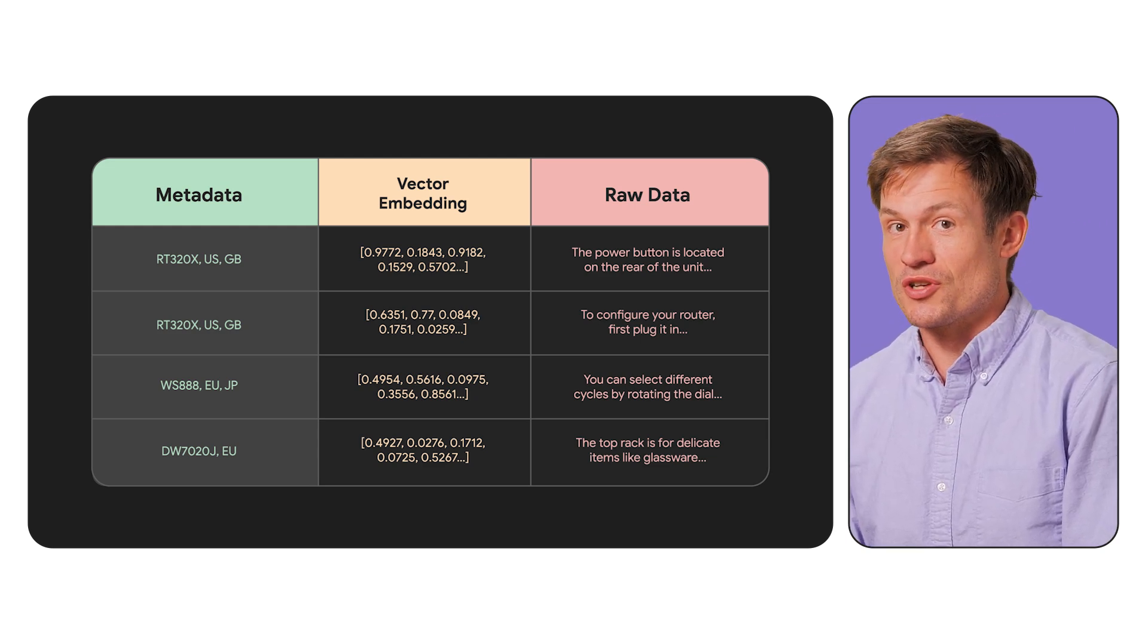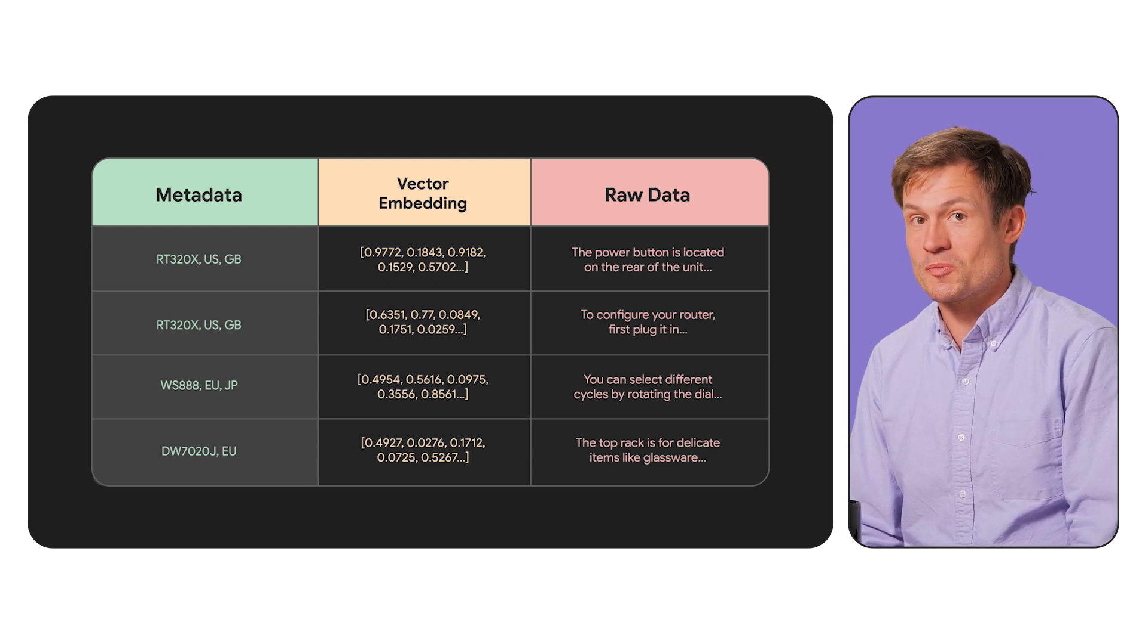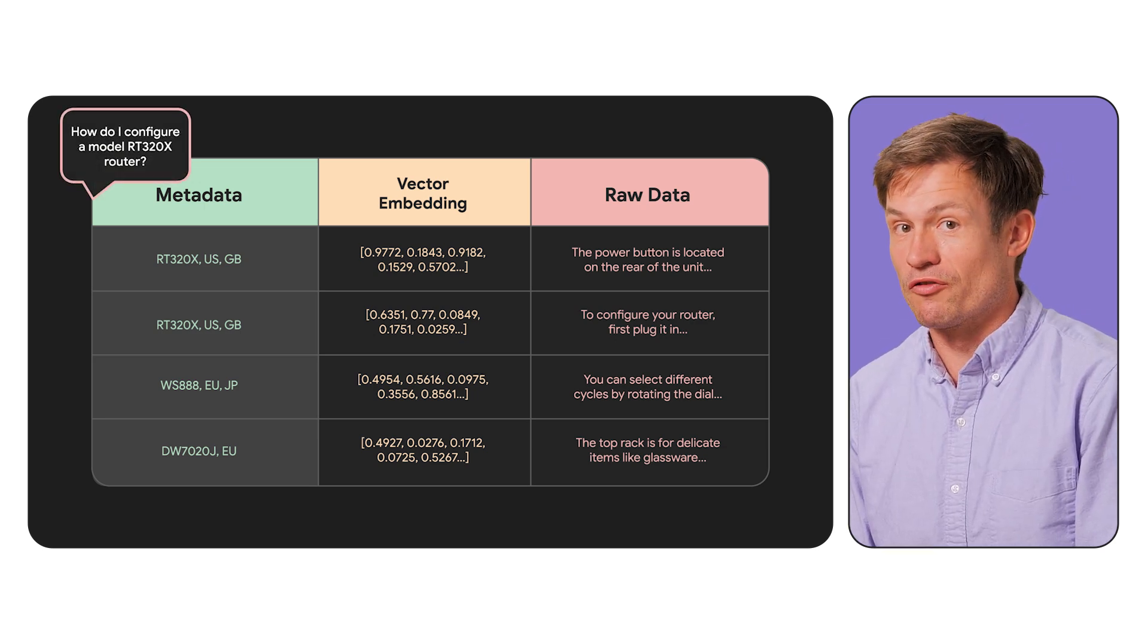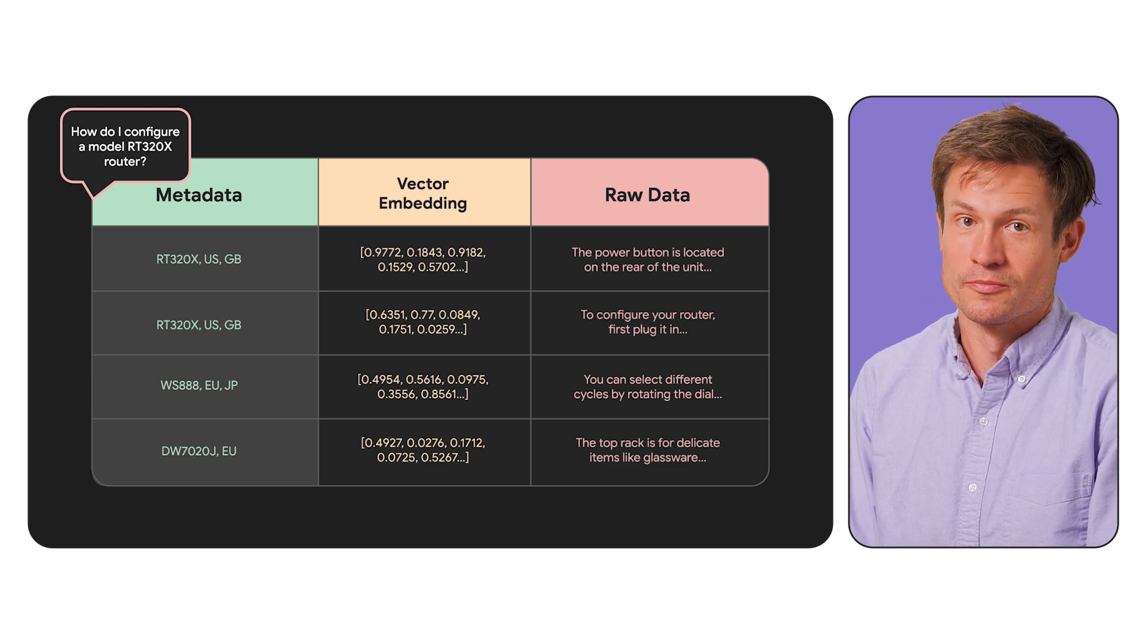You can manually input this data at ingestion time based on what you know about the data sources you are ingesting. Perhaps all the chunks from a specific product's user manual should have that product ID in the metadata, or labeling the information with the country tags of the countries that the specific chunk is actually relevant to. You can also ask an LLM to expand its own understanding of existing chunks by generating new metadata. When you go to retrieve your chunks, you can then use the metadata to filter your vector database before finding similar chunks.